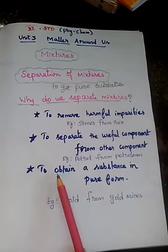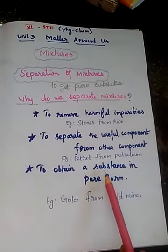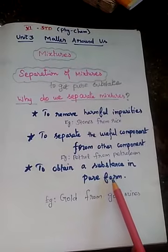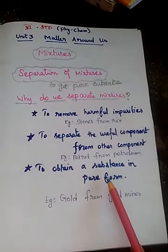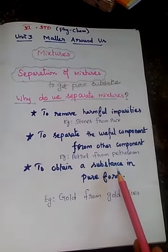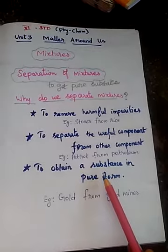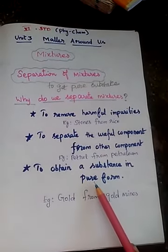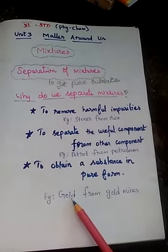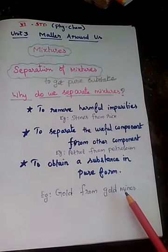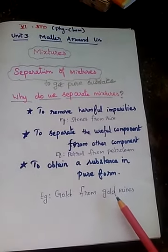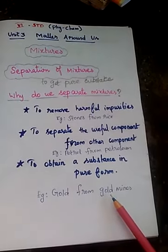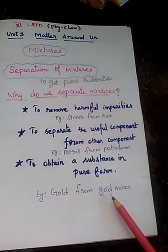Third, to obtain a substance in pure form. A substance has to be obtained in a highly pure form. For example, gold from gold mines. What is a gold mine? A mine yielding gold.